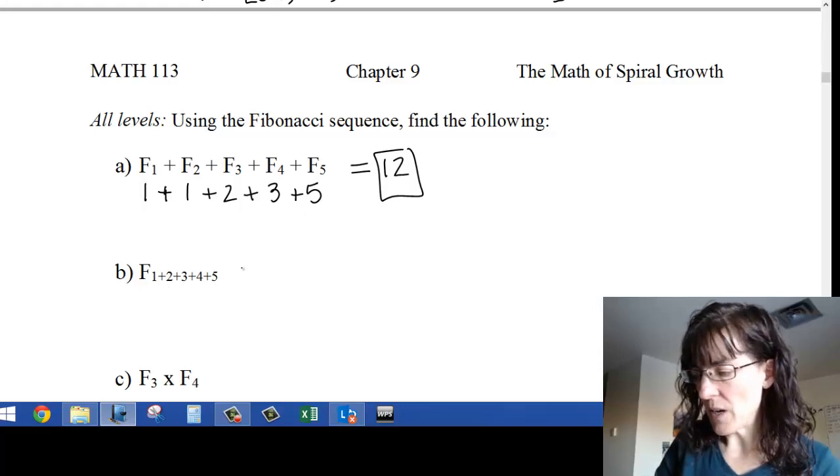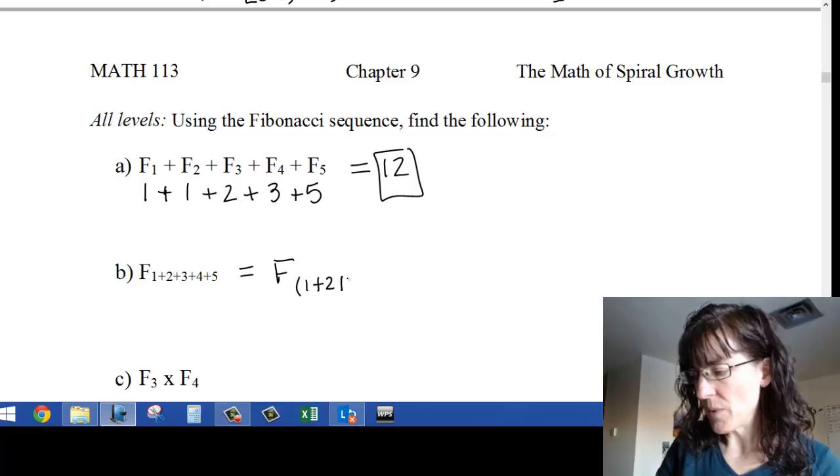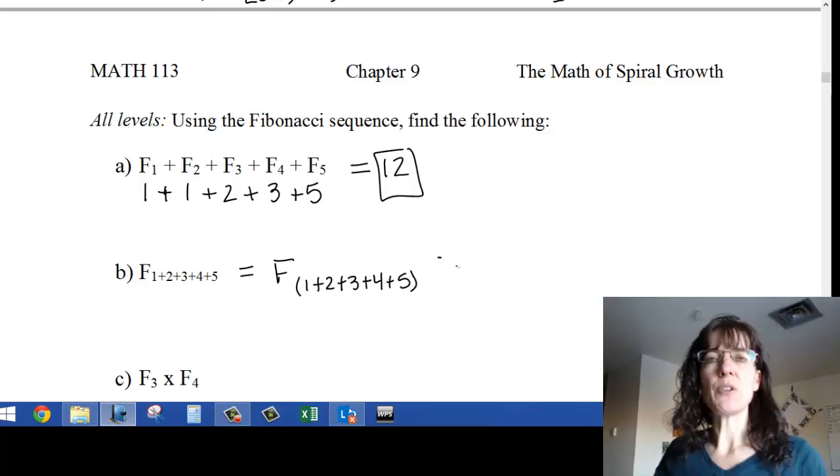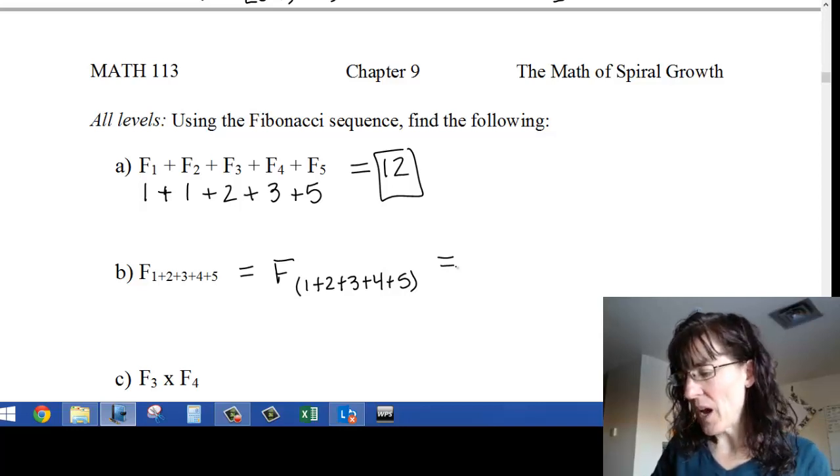This problem is telling me that I have to add 1 plus 2 plus 3 plus 4 plus 5 at the start before I do a table lookup for my Fibonacci number.